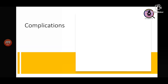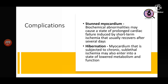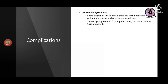Complications after myocardial infarction include: stunned myocardium — a prolonged loss of contractility due to short-term ischemia that recovers on its own after several days. Hibernation is a state in which the myocardium after chronic sublethal ischemia enters a state of lowered metabolism and function. After a significant portion of the myocardium becomes infarcted, there may be contractile dysfunction leading to ventricular failure with hypotension, pulmonary edema, and respiratory impairment. Severe pump failure is called cardiogenic shock, occurring in 10 to 15% of patients.